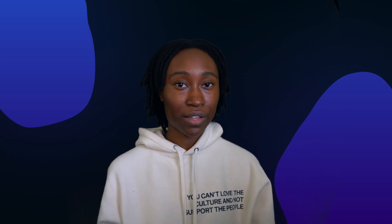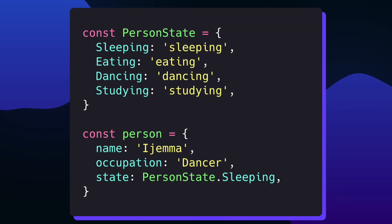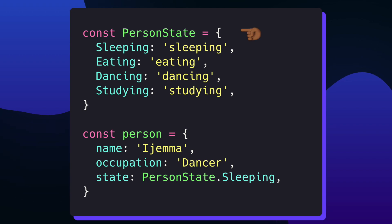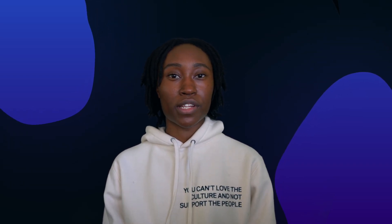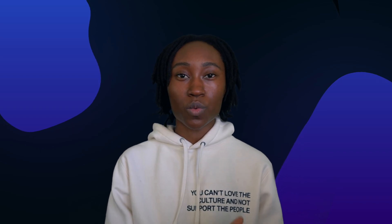One of the most popular reasons I use switch statements is whenever I want to deal with different states. Using switch statements is a lot easier to read and work with than if-else statements. For example, let's say I create a person object with a state field that has a string enum describing the current state the person is in. I create a person's state object that defines the different states a person can be in — like sleeping, eating, dancing, and studying — and I'm saying that my person is currently asleep. I actually prefer using switch statements here because I'm only dealing with one possible value per case.